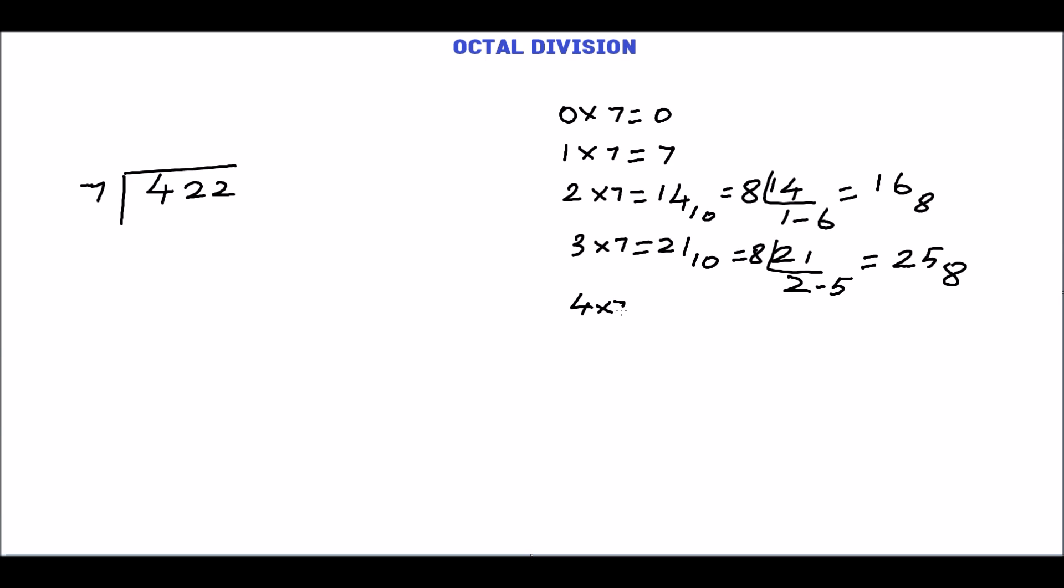4 times 7 is 28 in decimal. Convert this. Quotient is 3 and the remainder is 4. So the equivalent octal number is 34 base 8.